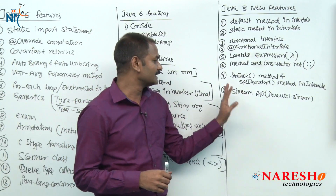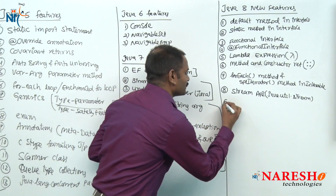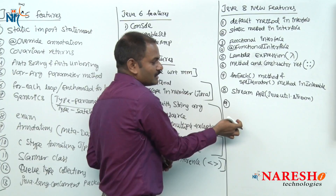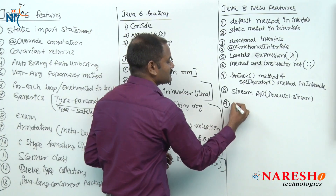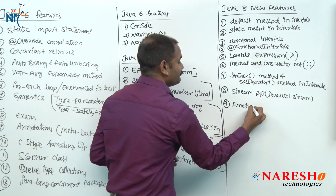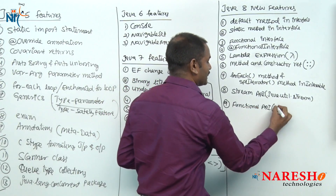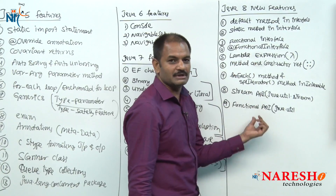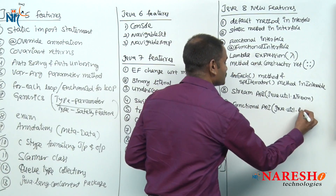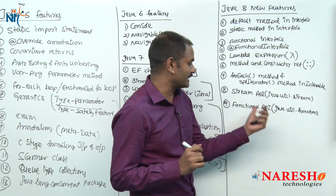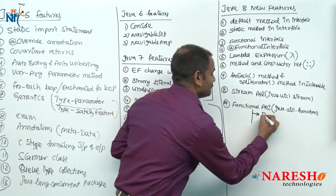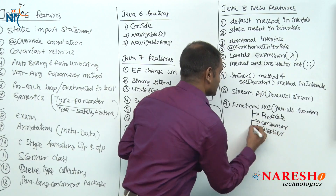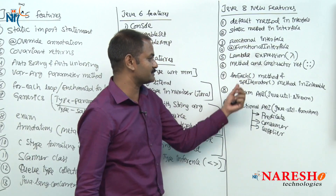Next to stream API, we got one more API — one more package under util package to support functional programming at the API level. This is called the functional API, given in the package java.util.function. Under this package there are three important classes: number one Predicate, number two Consumer, and number three Supplier. These three classes play an important role while working with lambda expressions and stream API.